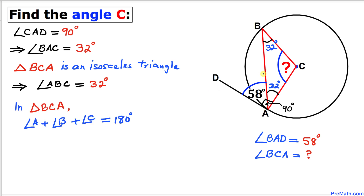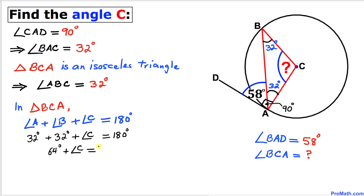Now let's focus on this triangle BCA once again. We know that the sum of all angles — angle A, angle B, and angle C — must be equal to 180 degrees. We know angle A is 32 degrees and angle B is 32 degrees as well. Now we are going to calculate angle C: 32 plus 32 is 64 degrees, plus angle C equals 180 degrees. Subtracting 64 degrees from both sides, our angle C turns out to be 116 degrees.